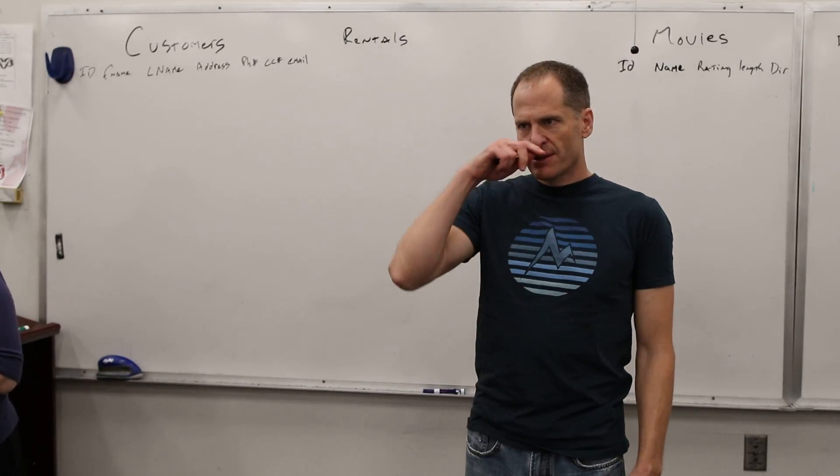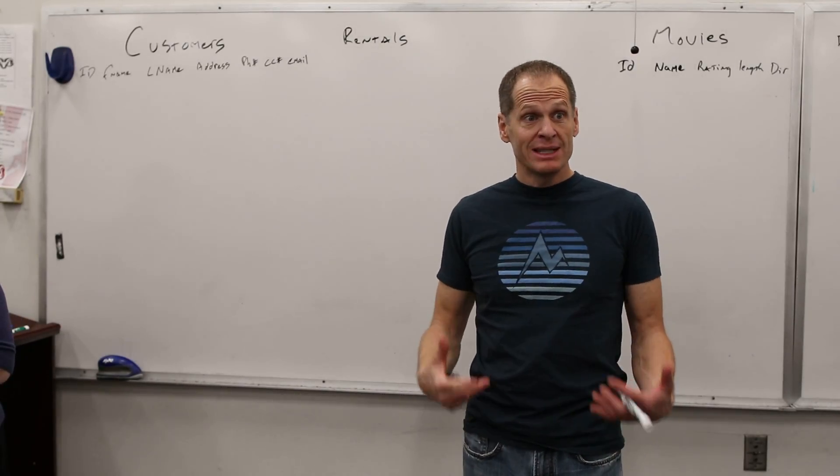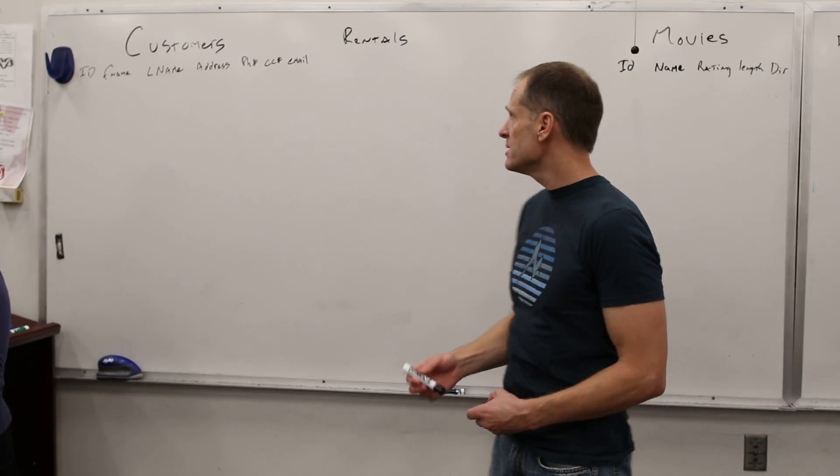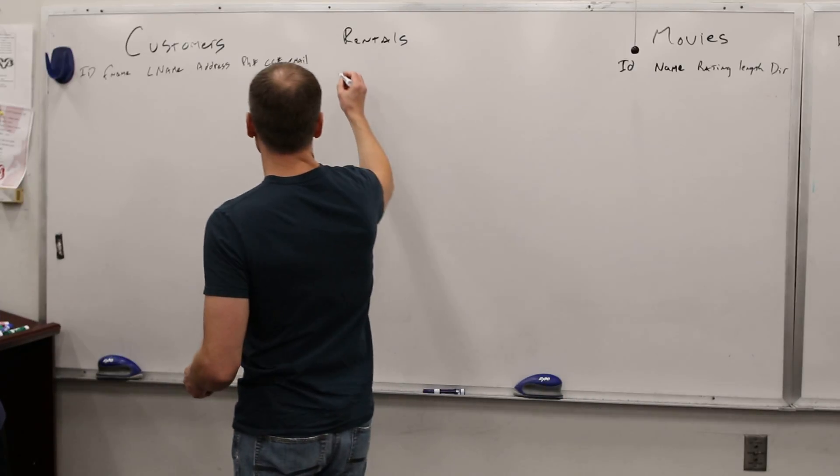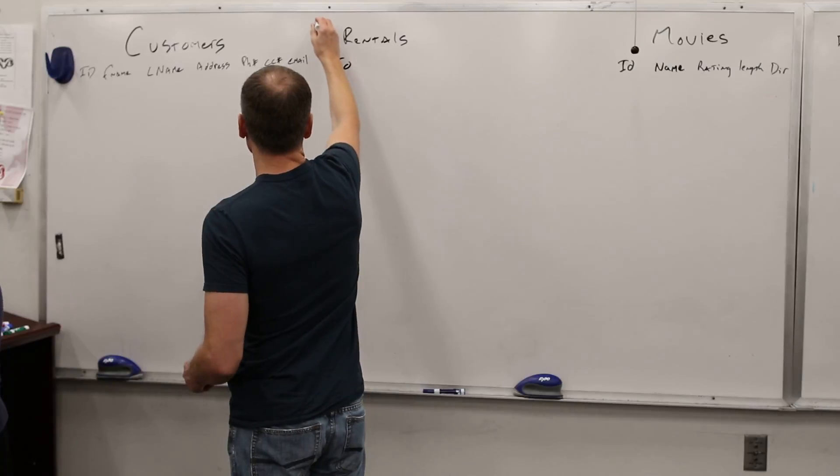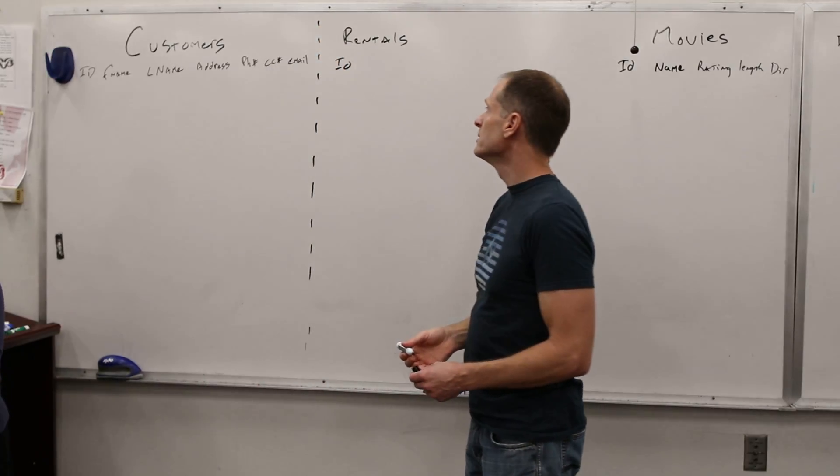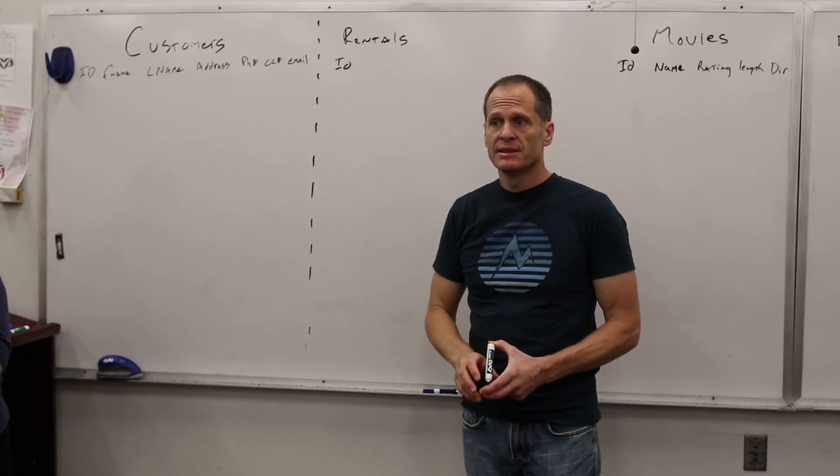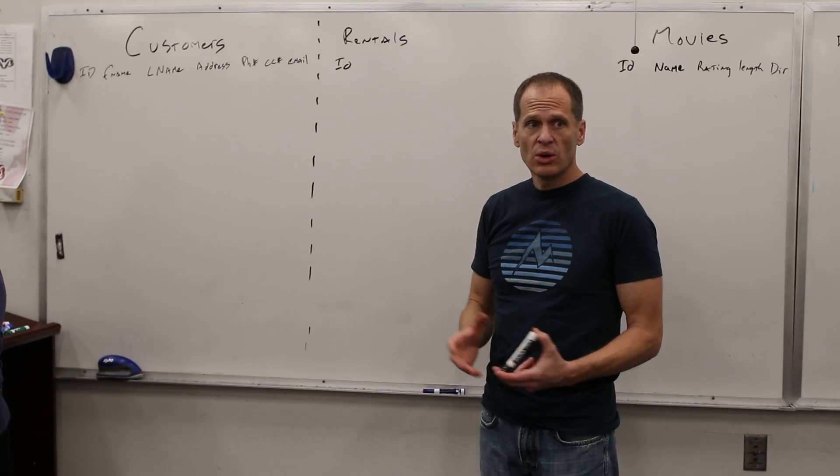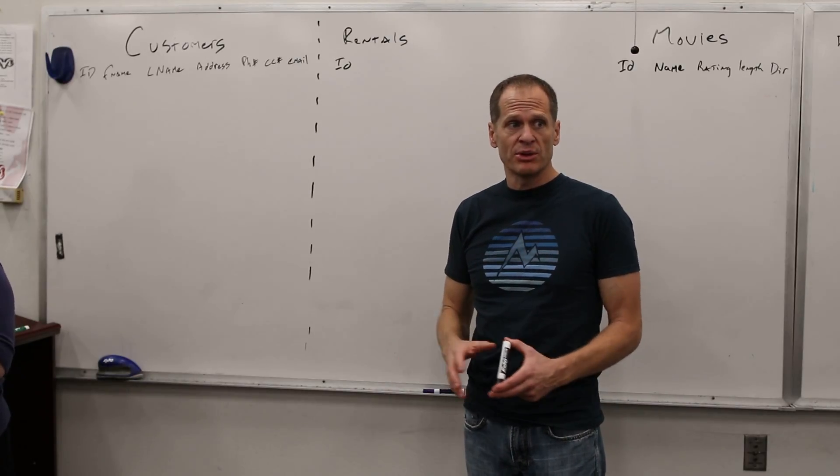Alright, so what did you come up with? How do we do it? What does every table need? It needs a unique ID, right? So we're going to have a unique ID for the rentals table. That's the first thing. Every table needs a unique ID.